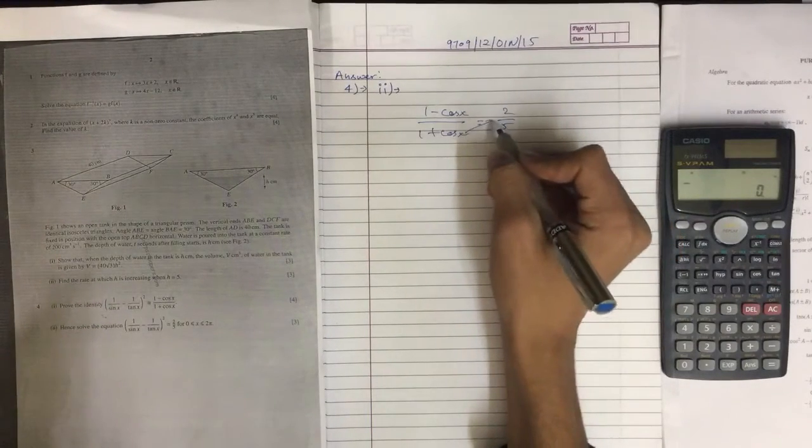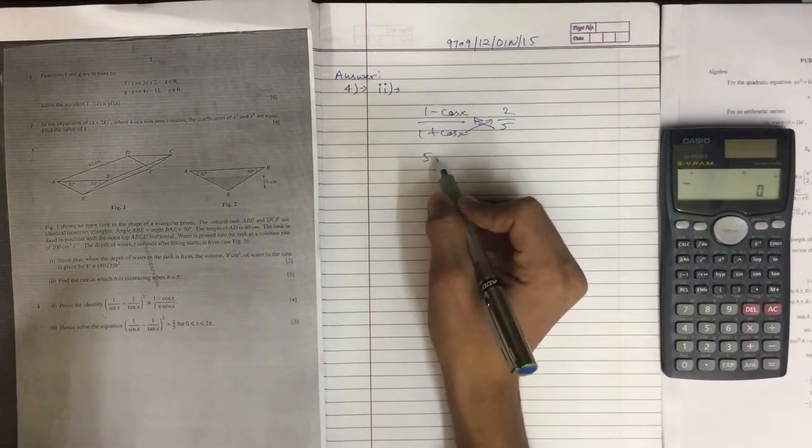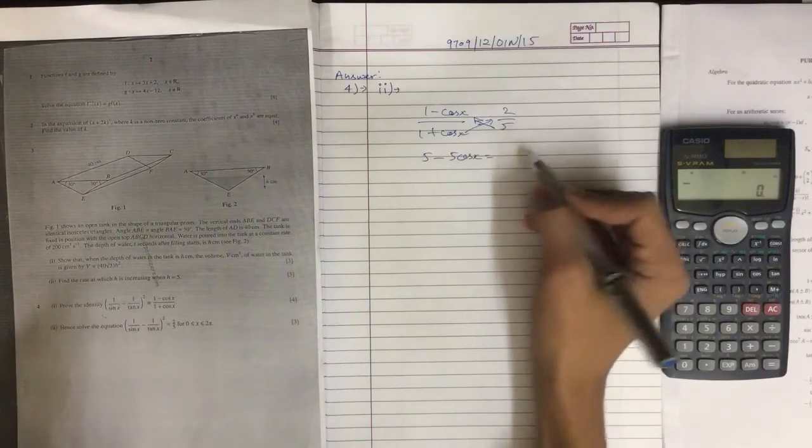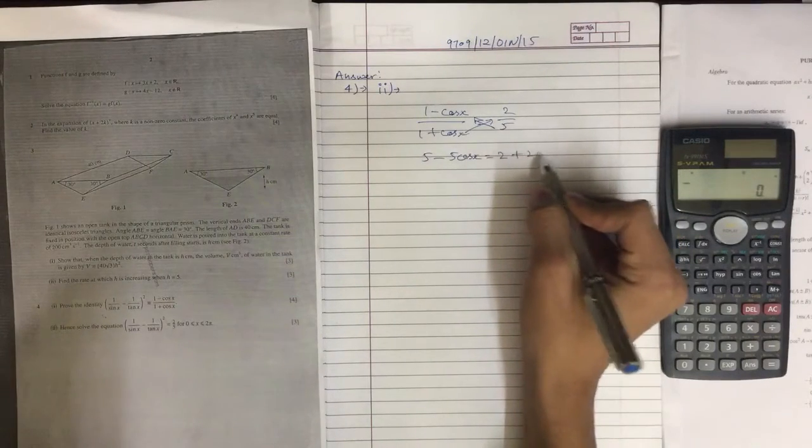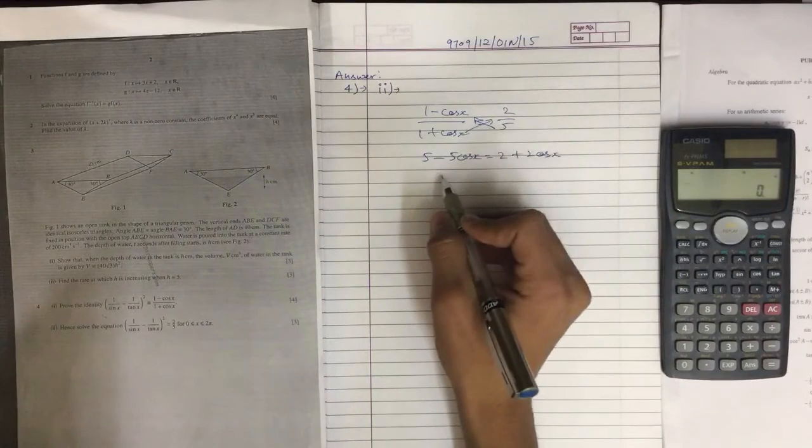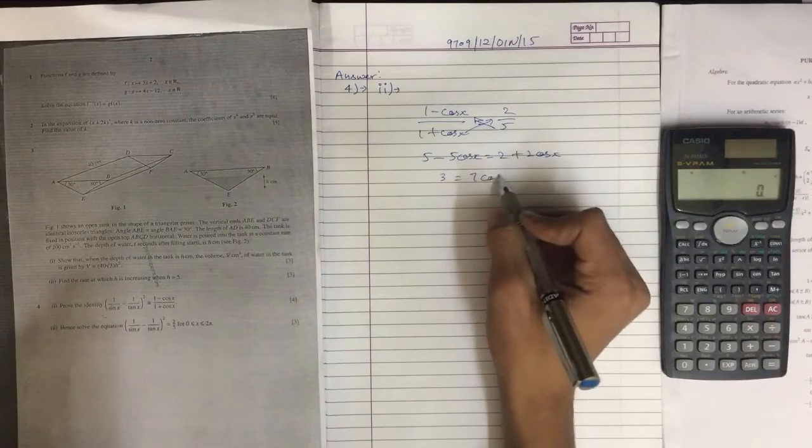Now we are going to cross multiply and we have 5 minus 5 cos x equals 2 plus 2 cos x. By rearranging we get 3 equals 7 cos x.